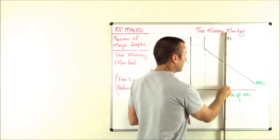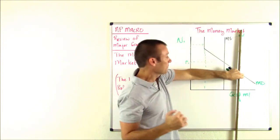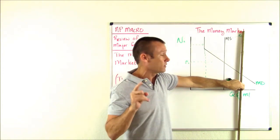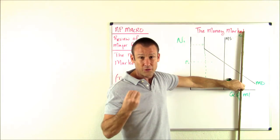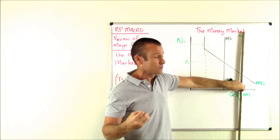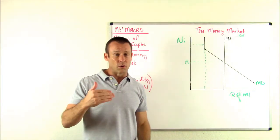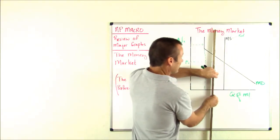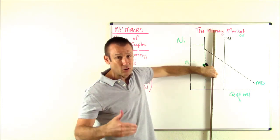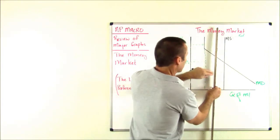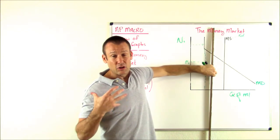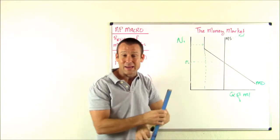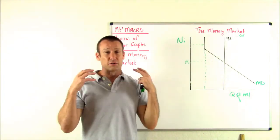When the money supply shifts right, the nominal interest rate goes down. People then hold more of their wealth in liquid form, which is what the Fed wants in a recession — they want us to spend more. Conversely, during an inflationary gap, the Fed will do tight monetary policy: open market sales, raise the required reserve ratio, or raise the discount rate. That shifts the money supply left, raising the nominal interest rate and reducing the quantity of money demanded.